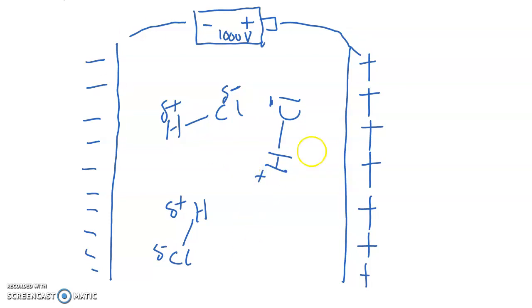And what you will see, the three will become something like this because they would like to share. The negatives will be closer to the positive and the positive will be closer to the negative. And this effect is called dipole moment of a molecule.